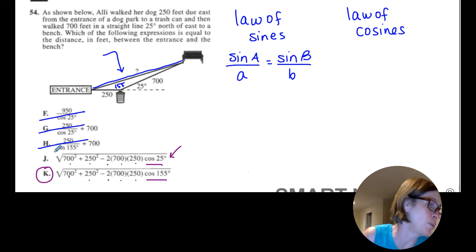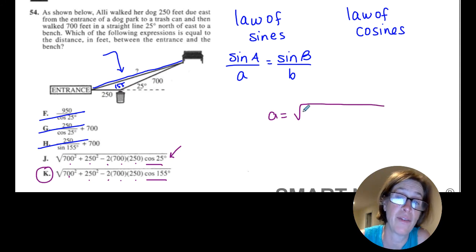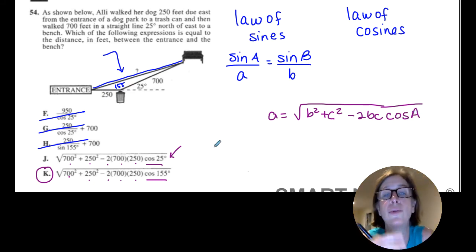Well, you may want me to review with you the law of cosines, so let's do that really quickly. The law of cosines, depending on how you learned it, is basically a equals the square root of b squared plus c squared minus 2bc cosine of A. And again, all of that, the a, b, and c relates to where you label your a, b, and c of your side lengths.